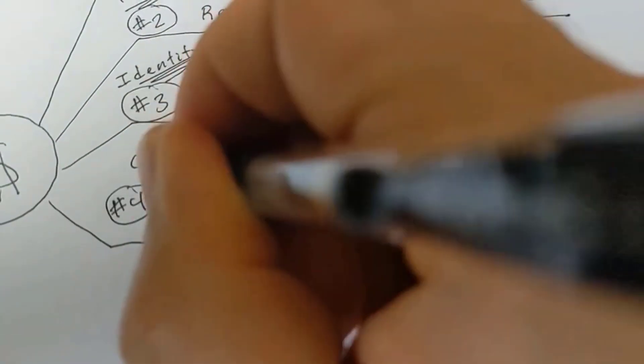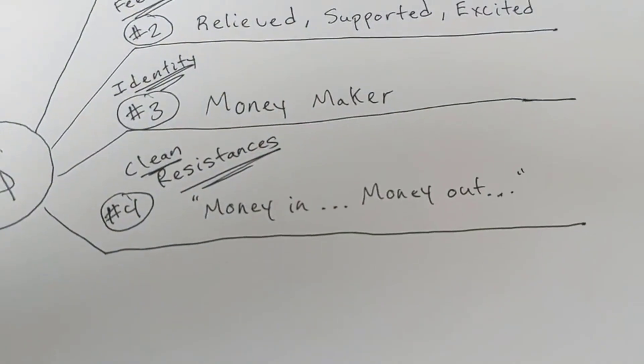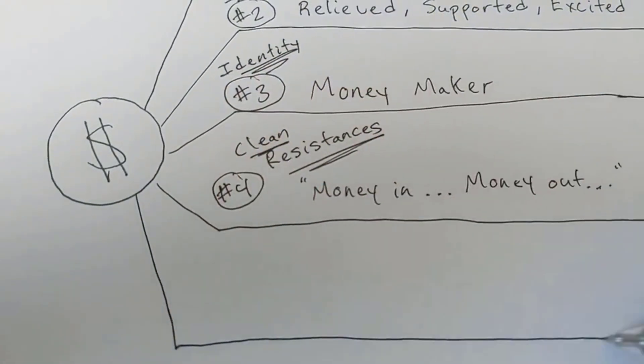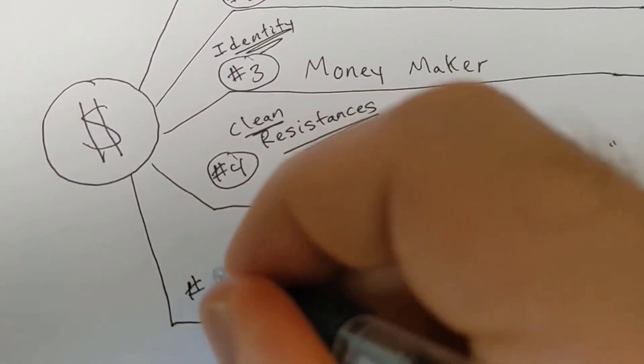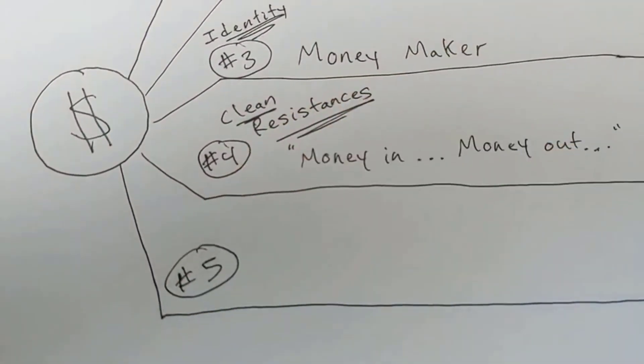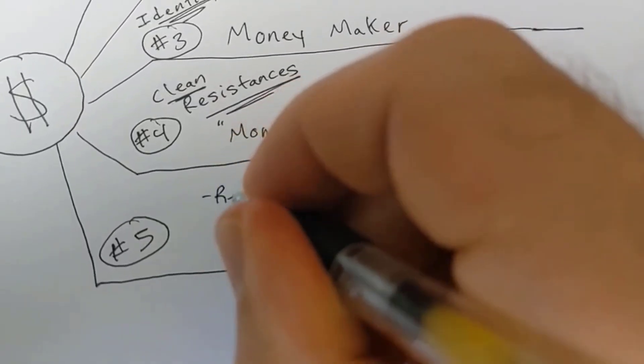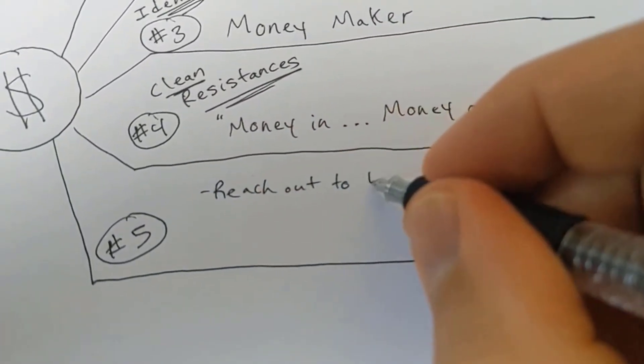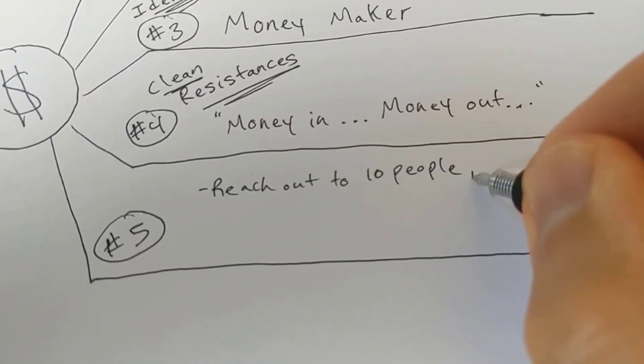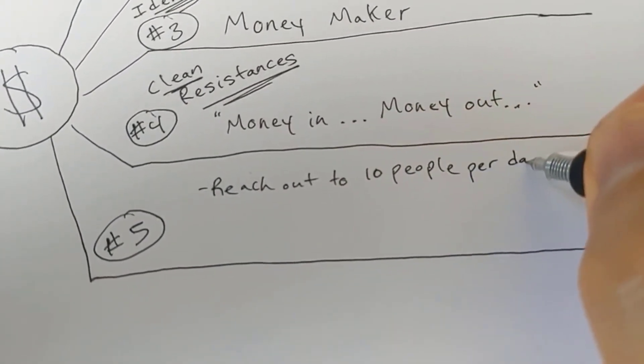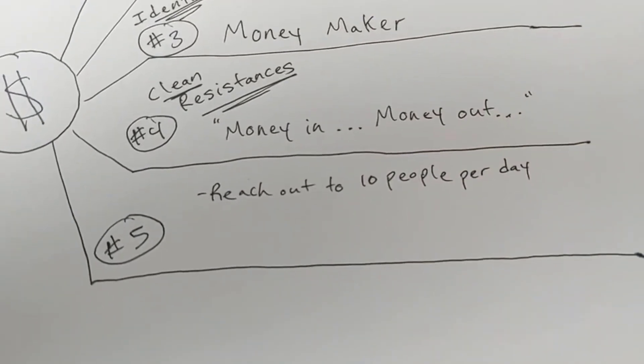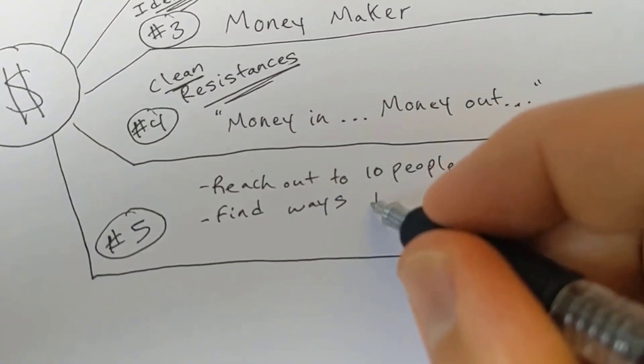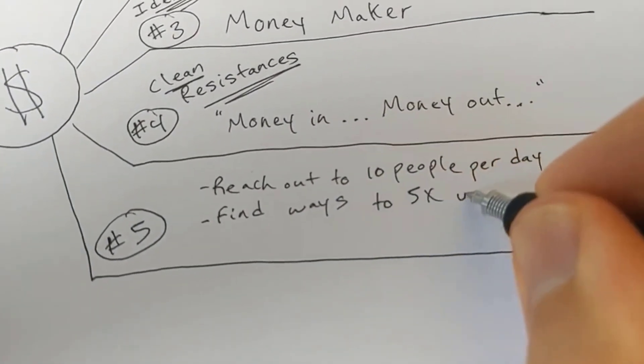I want you to write down that recurring challenge and write down clean resistances, because we need to clean up so that we can let and allow this goodness into our life. I'm going to talk about that more later in the video. Now, number five on that bottom line is all about aligned actions. If you have a business, for example, you could say, I'm going to reach out to 10 new people every day about my products and services, right? If you don't have a business, you have a full-time job, it may say, I'm going to reach out to 10 new perspective job offers daily to get a better job.